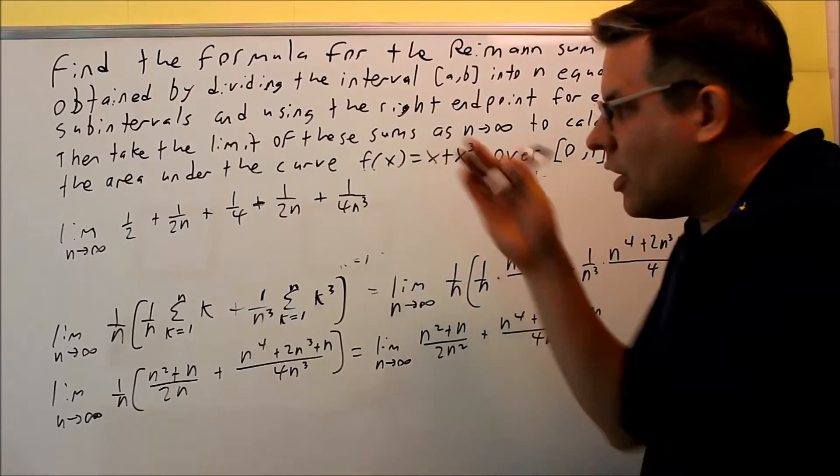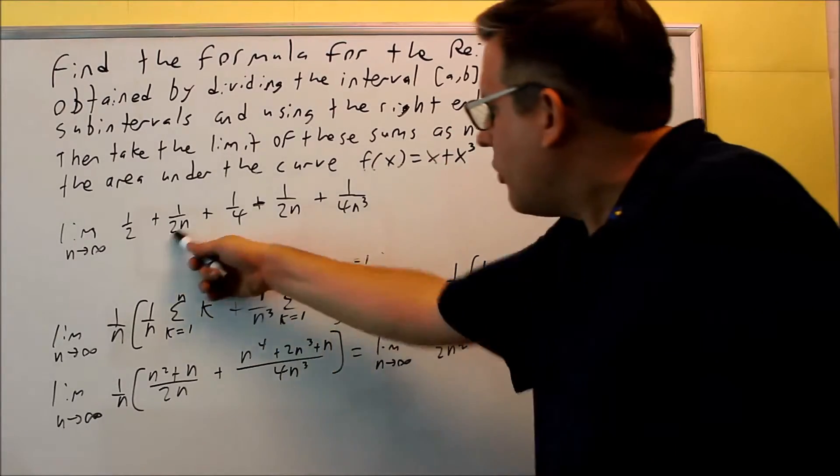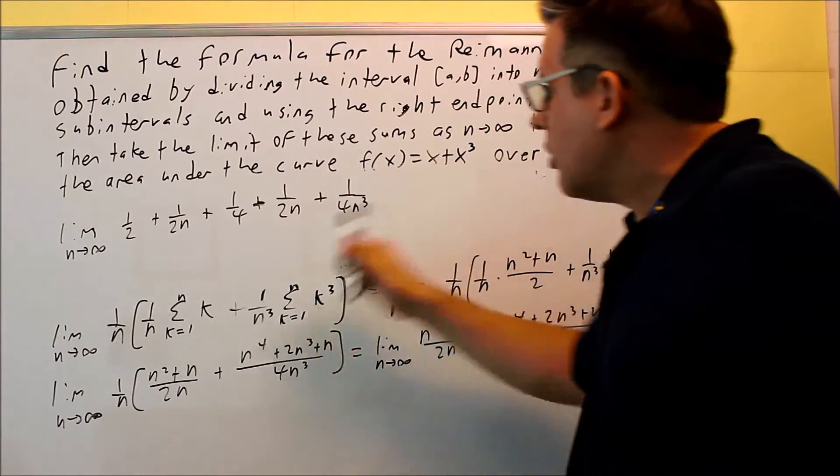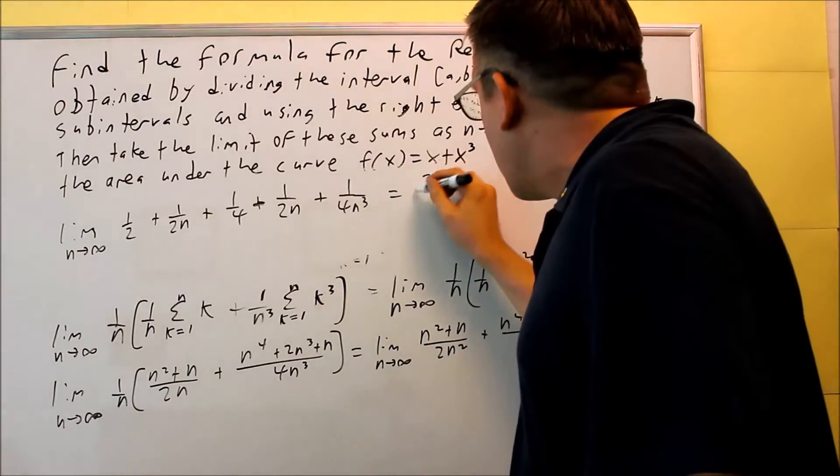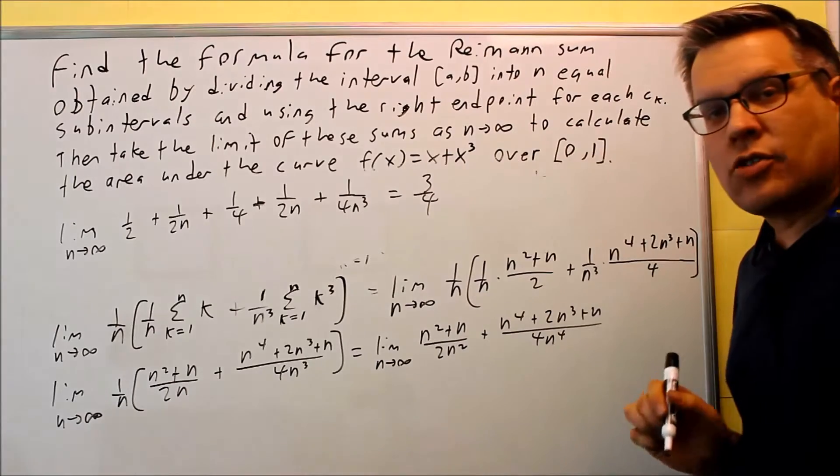Okay. And if I take the limit of that, this, this, and this are all going to go to zero, I end up with 1 half plus 1 fourth, which is going to give me 3 fourths. So 3 fourths will be the answer.